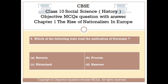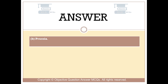Question number 5. Which of the following states led the unification of Germany? Option A: Bavaria. Option B: Prussia. Option C: Rhineland. Option D: Hanover. The right answer is Option B — Prussia.